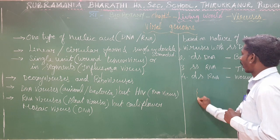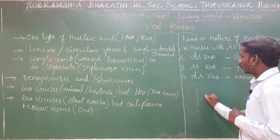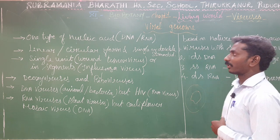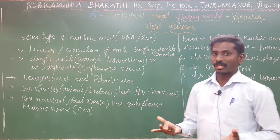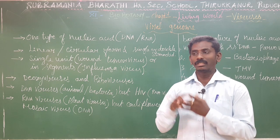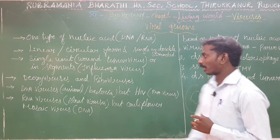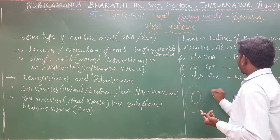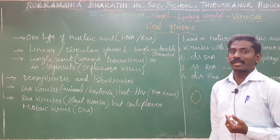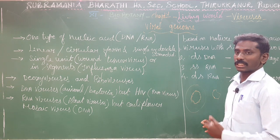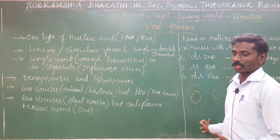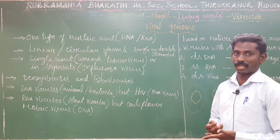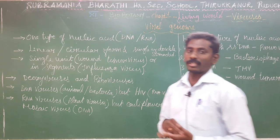Linear means single strand only. Maximum RNA is single-stranded, and DNA is double-stranded. However, the virus is an exception — it can have double-stranded RNA and single-stranded RNA, as well as single-stranded DNA and double-stranded DNA.